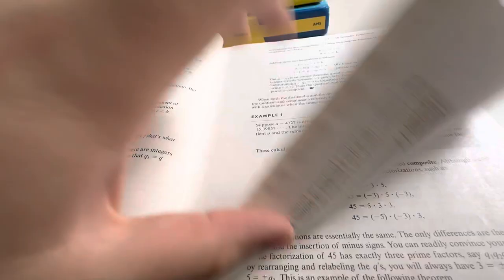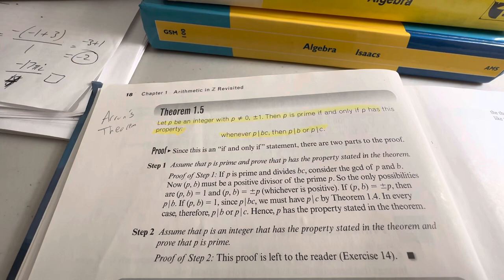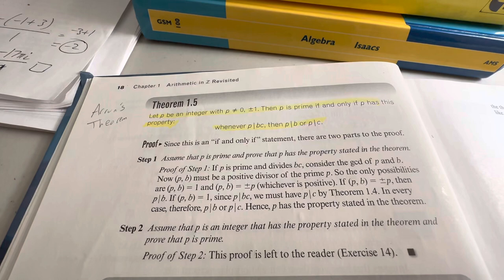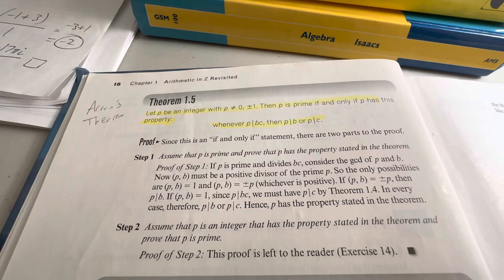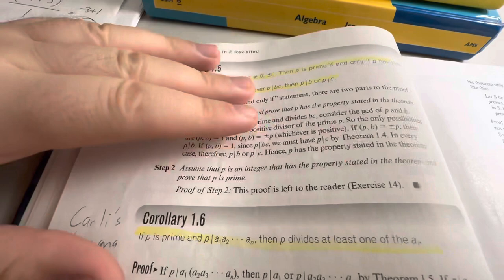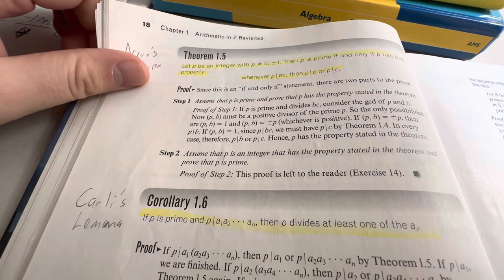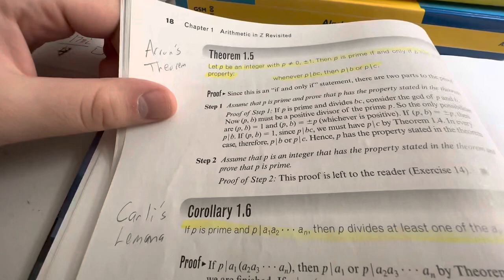So we can look at a theorem. Let P be an integer. P is not equal to 0, plus or minus 1. P is prime if and only if P has the property: when P divides BC, then P has to divide B, or P divides C. And then they give a short little proof. And as always, they have to leave part of the proof as an exercise for the reader. And apparently someone wrote Aaron's Theorem and Carly's Lemma off to the side.